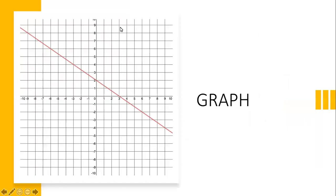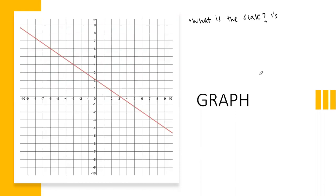Let's look at our first graph. I want you to study this graph and think about some things — I'm going to ask some questions. My first question is: what is the X axis and the Y axis going by? What is each tick mark worth? It's going by ones, which makes this a thousand times easier.